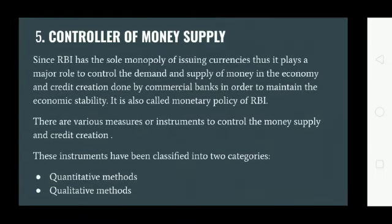The fifth function is controlling of money supply, which is the most important function of RBI. Since RBI has the sole monopoly of issuing currency, it plays a major role in controlling the demand and supply of money in the economy and credit creation done by commercial banks, in order to maintain economic stability. This is also called the monetary policy of RBI.